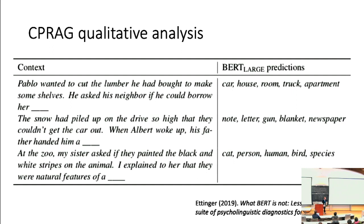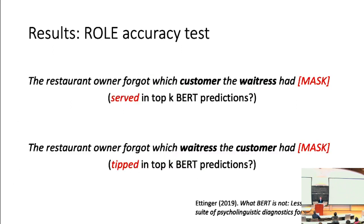Looking at qualitative outputs for more cases: 'At the zoo, my sister asked, they painted the blank and white stripes on the animal. I explained to her that they were not.' BERT picks up on the animal theme — not surprising given 'zoo' and 'animal' — but hasn't picked up on the fact that it's a zebra. This is probably a failure of common sense knowledge about what zebras look like. That rounds out dataset one. For the Role accuracy test, we're testing whether 'served' is in the top K predictions for the first context and 'tipped' for the other. Accuracies here are quite a bit lower, but in fairness the constraint level — the maximum cloze — of these items is also lower. Higher constraint bins do yield higher accuracy, and with K equals 5 BERT Large does a substantially better job of matching human predictions.